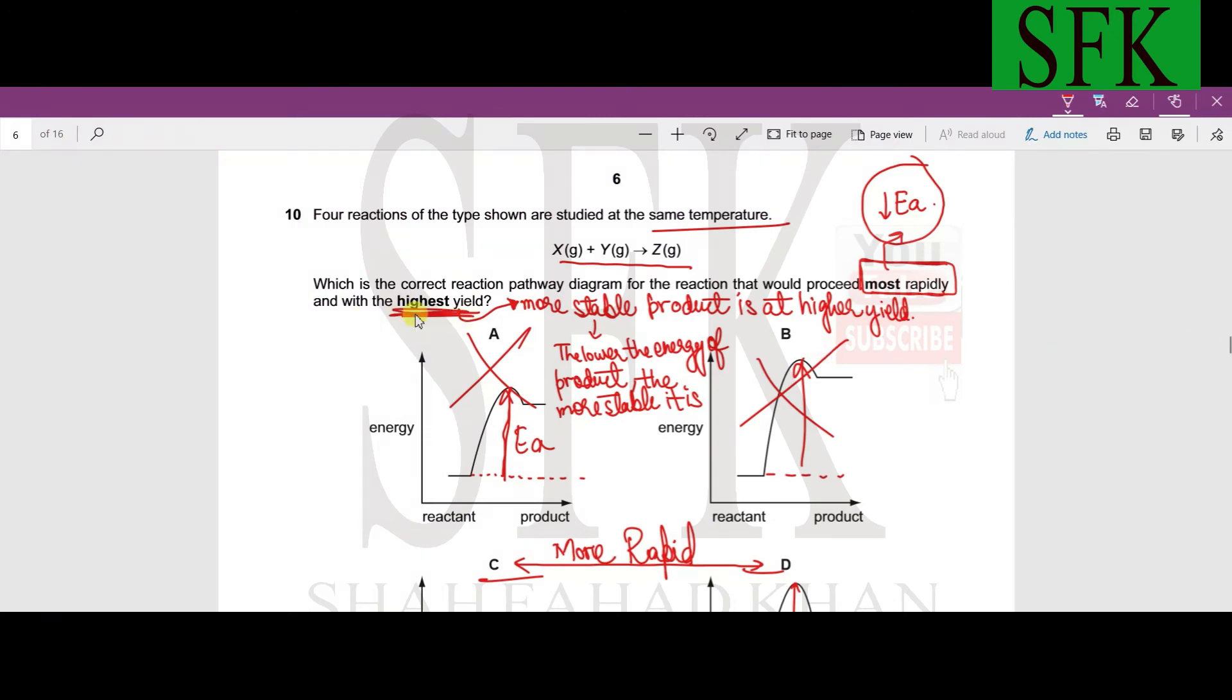It asks us which one will have the highest yield. Guys, one thing to note is that yield means the product, the quantity of product, and a product will be in higher concentration only if it is stable. And one rule of thumb is that the product at lower energy level is more stable, is always more stable.